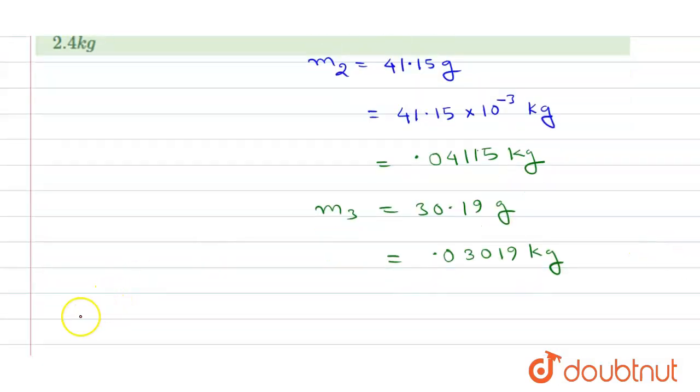Now we have to add these three numbers, three masses. So m would be equal to m1 plus m2 plus m3.